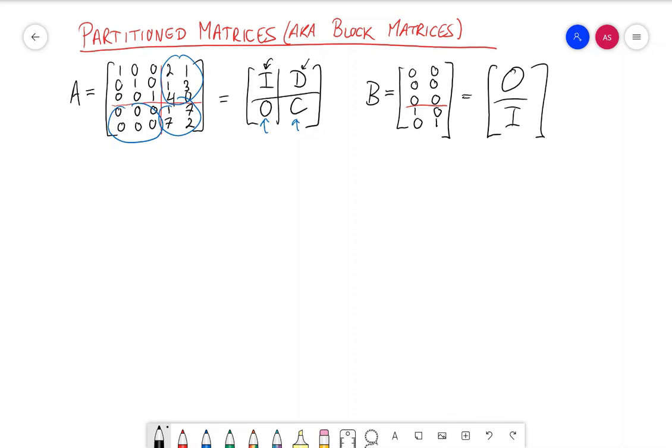So why do this? Well, if you have zero matrices and identity matrices as some of your blocks, it can make matrix multiplication much easier.